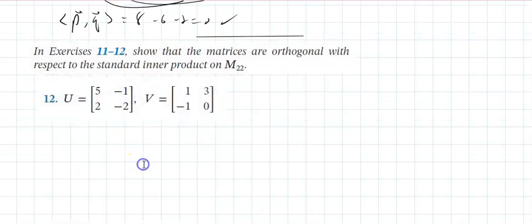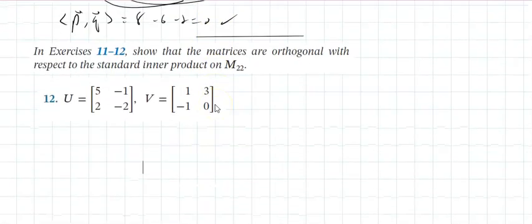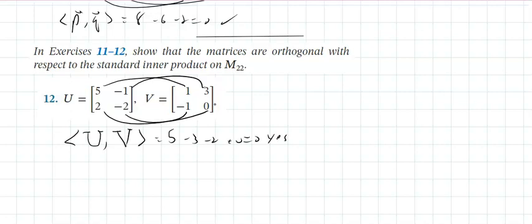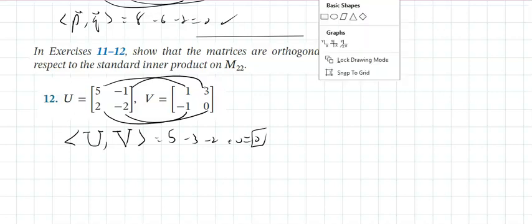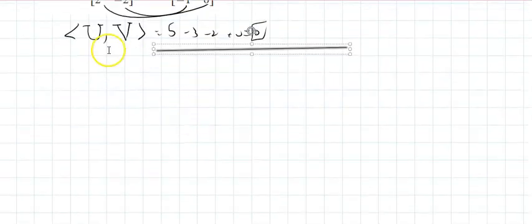For matrices, the inner product can be computed two ways — using the trace formula or component-wise. The quicker way: take U dot V component-wise as 5 minus 3 minus 2 plus 0, which equals 0. Since the inner product is 0, the matrices are orthogonal. Showing this is all that's required.